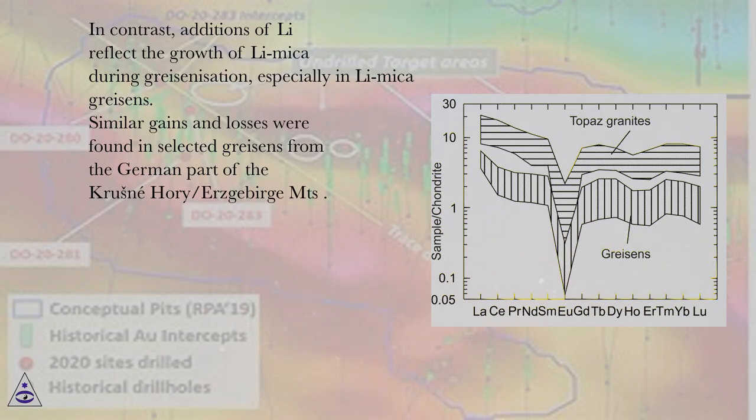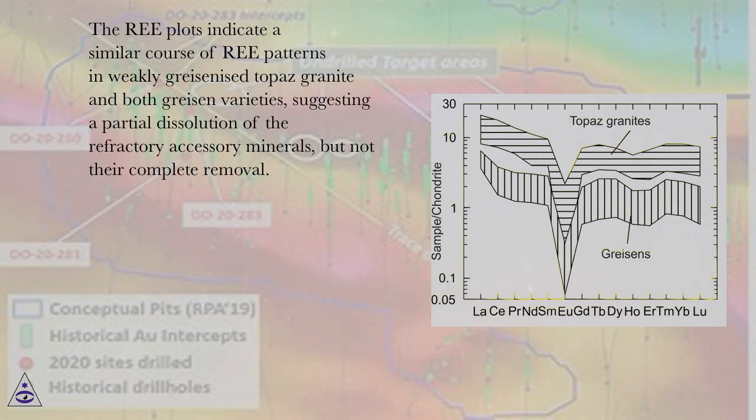Similar gains and losses were found in selected greisens from the German part of the Krusne hory-Erzgebirge Mts. The REE plots indicate a similar course of REE patterns in weakly greisenized topaz granite and both greisen varieties, suggesting a partial dissolution of the refractory accessory minerals, but not their complete removal.